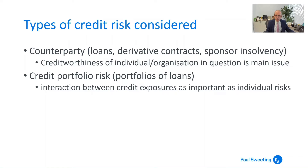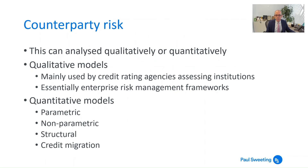Counterparty risk is where you're looking at a particular loan, derivative contract, or sponsor insolvency — it's the creditworthiness of the individual organisation that we're interested in. You take a particular counterparty and ask what are the chances it's going to default on its obligation. Credit portfolio risk, on the other hand, is looking at a portfolio of loans and trying to work out how many of those will default. Here we're as interested in the interaction between the different credit exposures as in the individual risks — the correlation, or even the shape of the correlation — which takes us towards things like copulas in trying to work out how a portfolio of risks might behave.